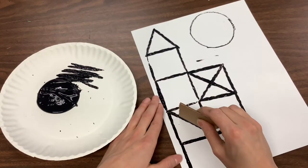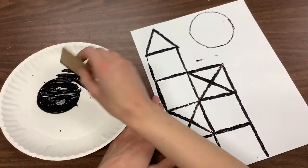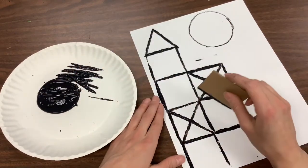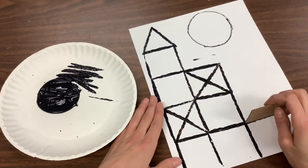So you'll notice that in Paul Klee's castle, he has lots of different shapes inside of each shape. So maybe I want to add some to my picture too.